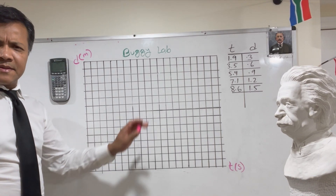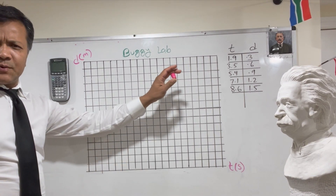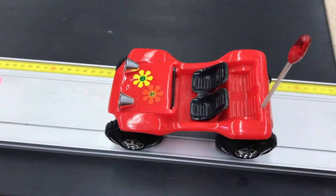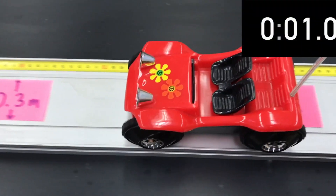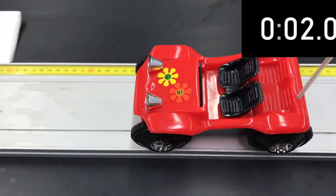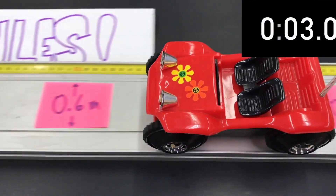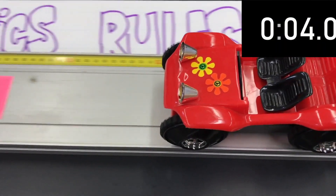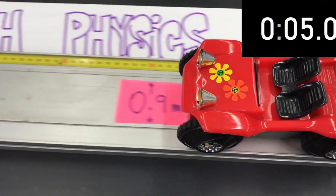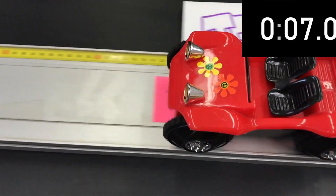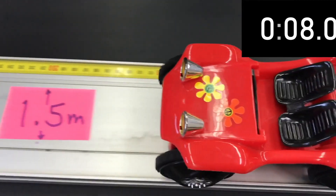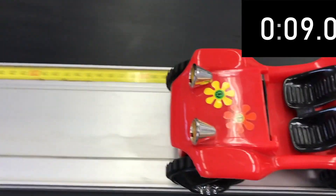This is our buggy lab and this is the data we collected. We're going to ignore the zero. The time values are 1.9 seconds, 3.5 seconds, 5.4 seconds, 7.1 seconds, and 8.6 seconds.